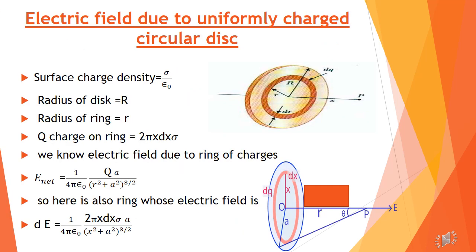Let's come to our topic: Electric Field Due to a Disk of Charges. If we have a uniformly charged circular disk with surface charge density sigma (coulombs per meter square) and radius capital R, then on this disk's axis at a distance 'a' from the center — which is the point where we want the electric field — how do we calculate this? This we will discuss today.